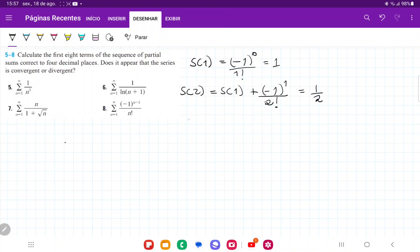S(3) is going to be the previous sum, S(2), plus (-1) to the power of 3 minus 1, which is 2, over 3 factorial. This gives us 0.6667.